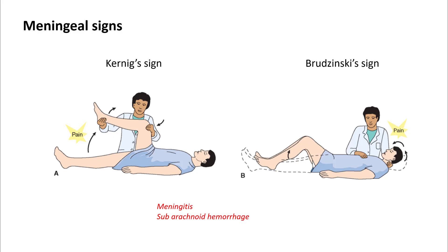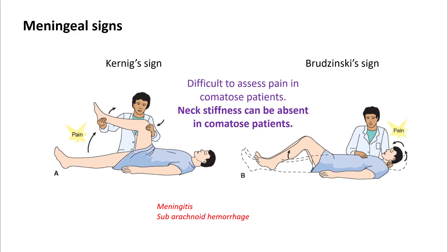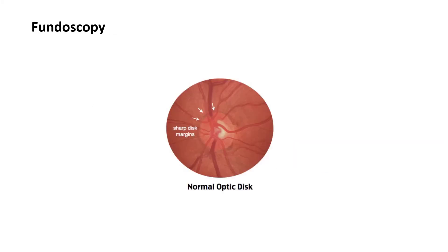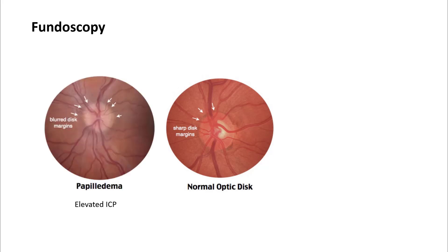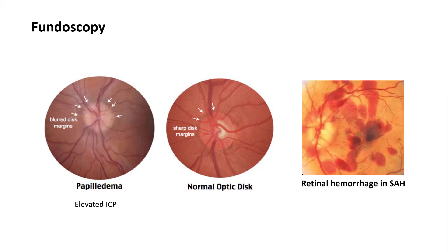Meningeal signs are not very helpful because it is difficult to assess pain in a comatose patient, and neck stiffness can also be absent. However, if signs are present, they may suggest meningitis or subarachnoid hemorrhage. Fundoscopy is an integral part of the evaluation of altered mental status, so make yourself familiar with it. You can see papilledema, which can be seen in elevated ICP, or retinal hemorrhage, which can be seen in subarachnoid hemorrhage.